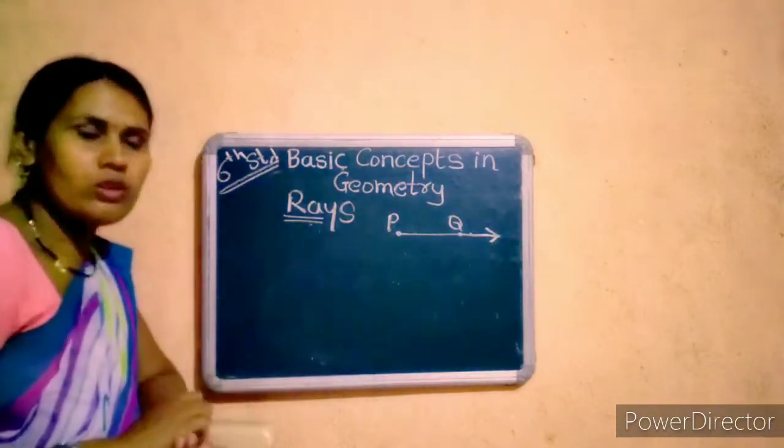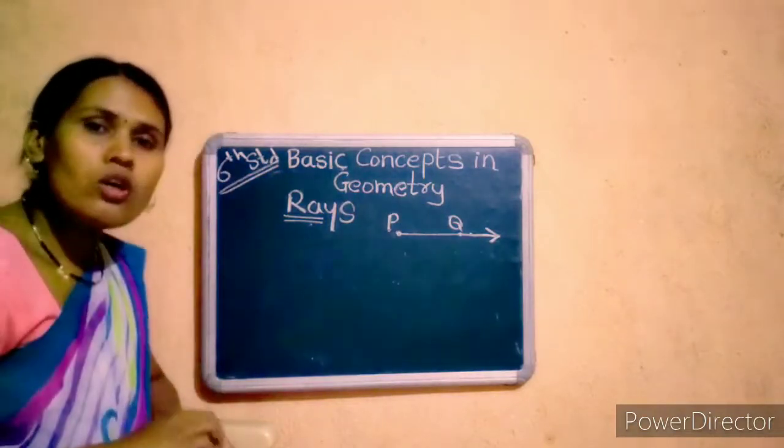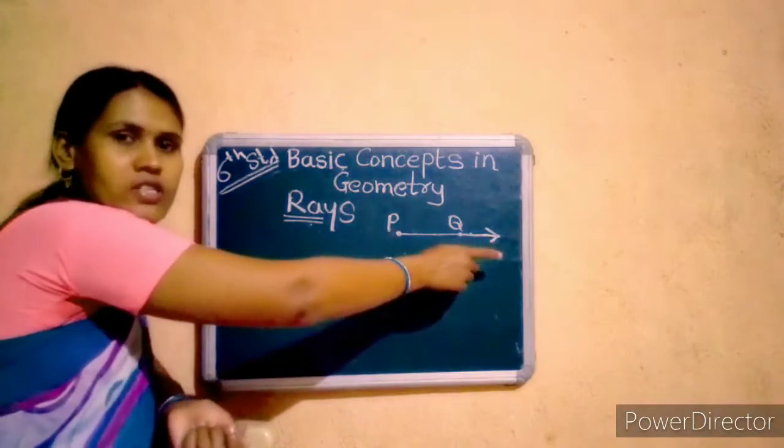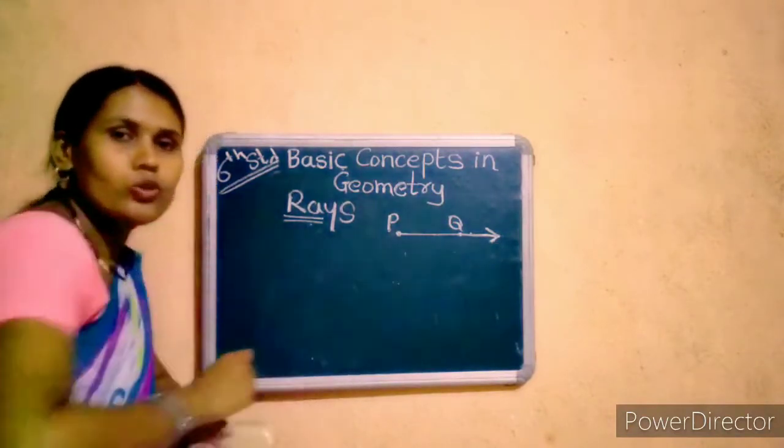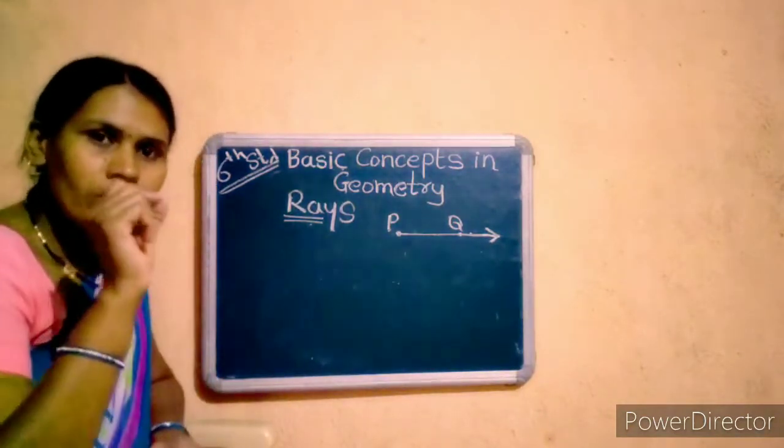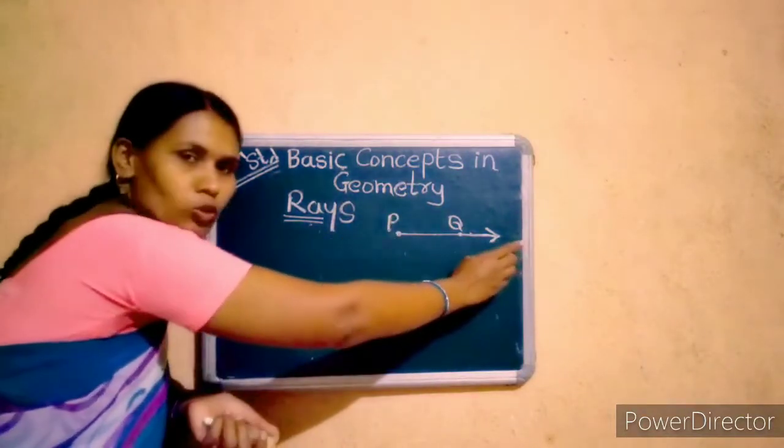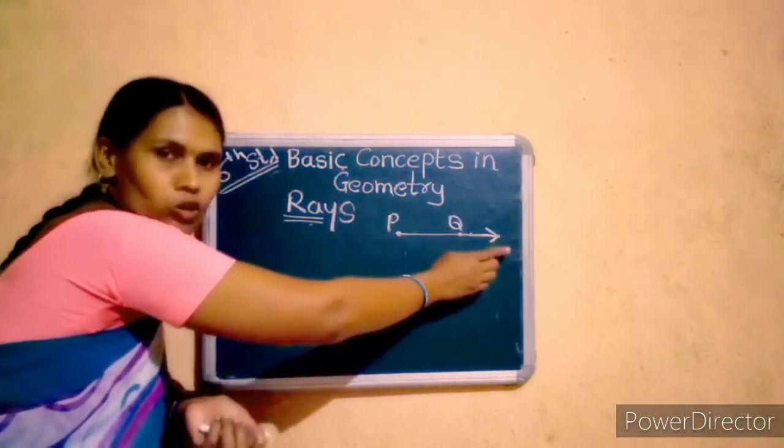This arrow I draw here to show the direction of ray. This arrow is drawn here to show the direction of ray.